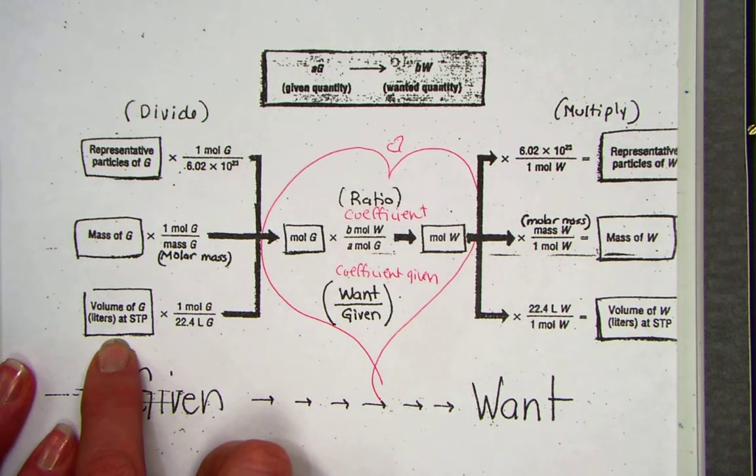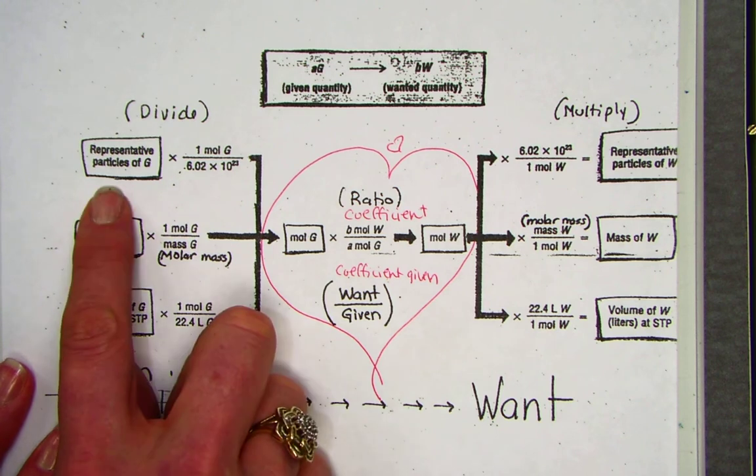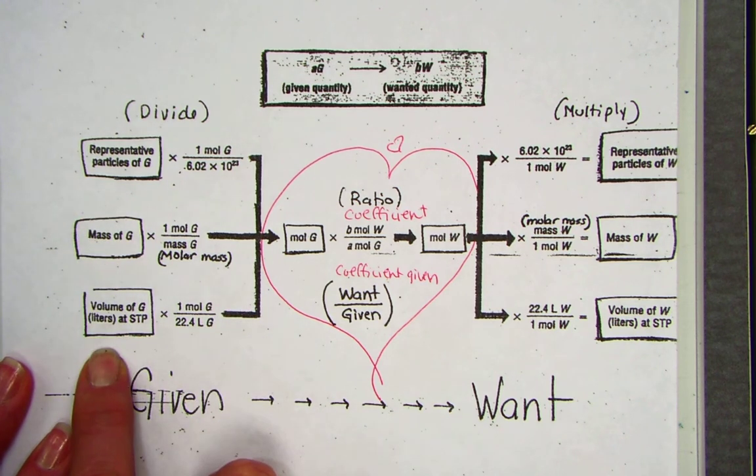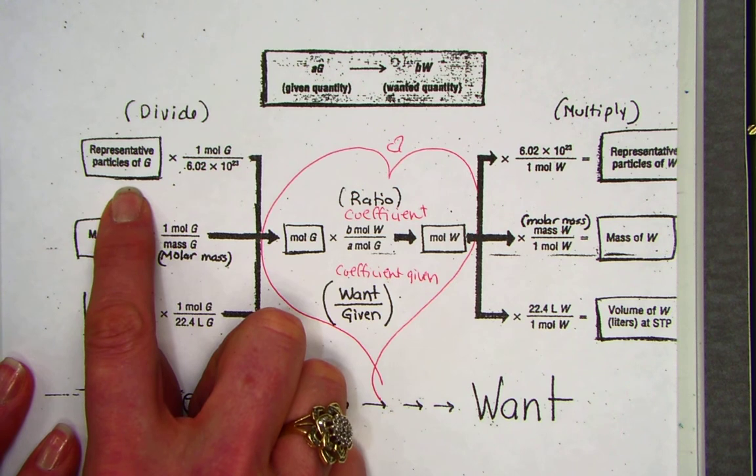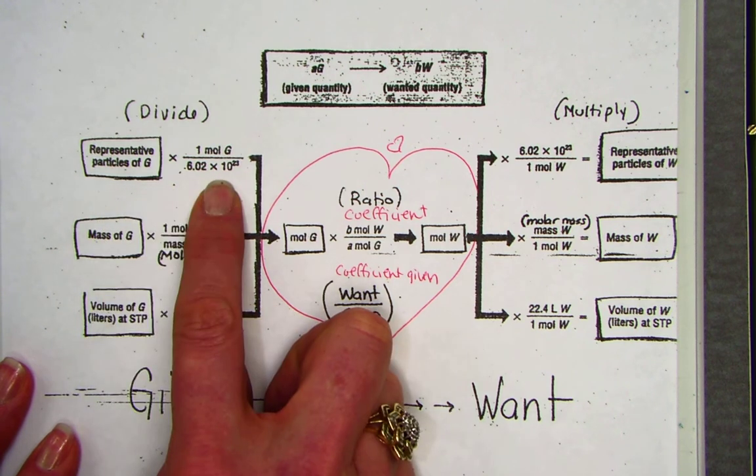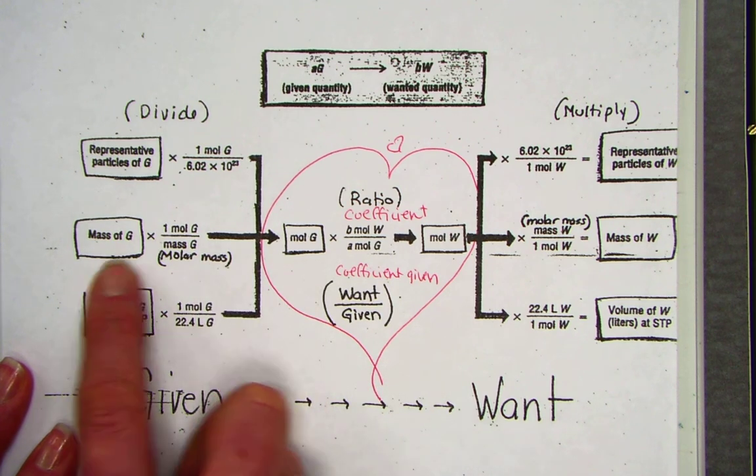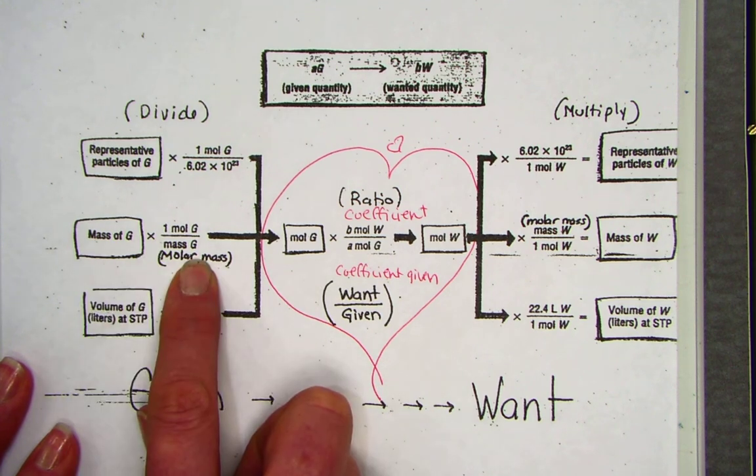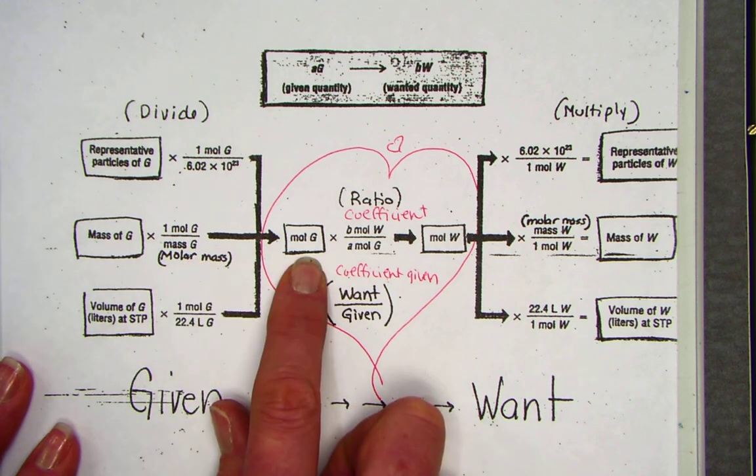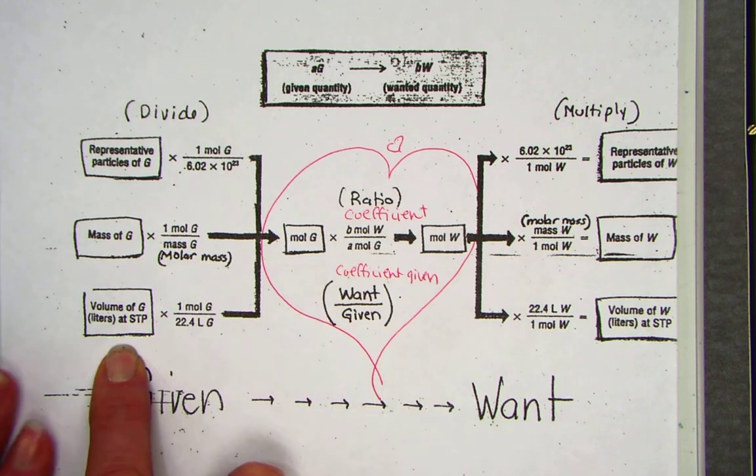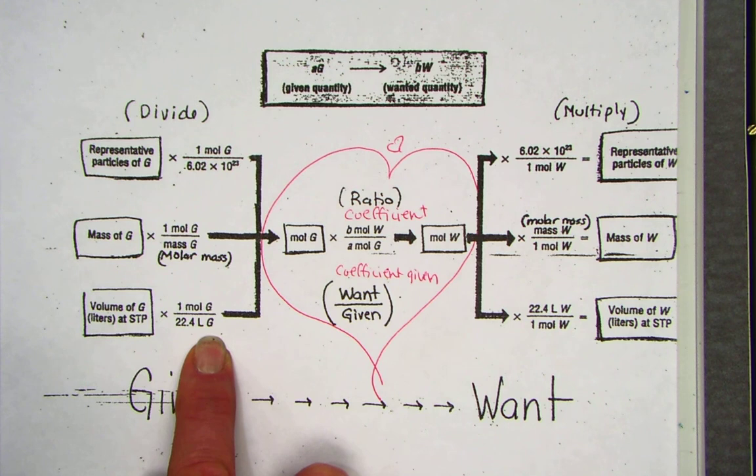We can solve any category of stoichiometric problems using our stoichiometry road map. Remember, in chemistry, when we measure matter, we can count, we can weigh, or we can take a volume. If we're given the number of particles, we see Avogadro's number as the unit of exchange into the mole. Given a gram, it's molar mass that leads us into the mole. If it's a volume of a gas, and it must be a gas to do volumes, we use the molar volume value of 22.4.